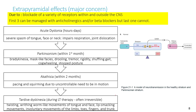Extrapyramidal symptoms (EPS) are a major concern, with four types. Acute dystonia appears within hours to days of the first dose. Parkinsonism occurs within the first month. Akathisia occurs within two months. Tardive dyskinesia appears during long-term therapy and is often irreversible. The first three are reversible if the drug is changed or withdrawn, but the last is not.